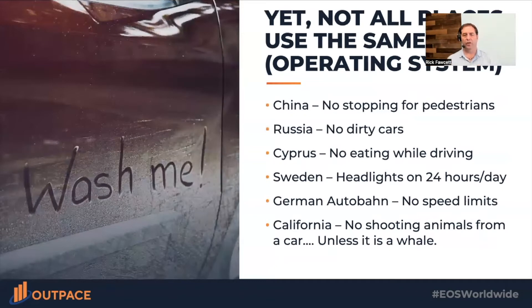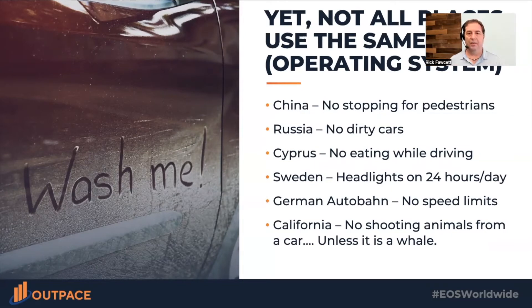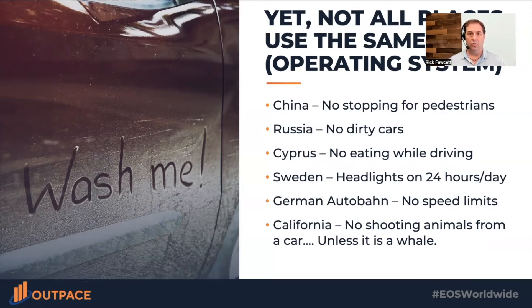Not all operating systems are the same — just like there's Apple and Android. Every country, and in the US every state, has a different way of doing things. In the United States you're expected to stop for pedestrians; in China you're not — in fact you get in trouble if you do. In Russia you can't have a dirty car or you get fined. In Cyprus, eating while driving gets you in trouble. In Sweden, if you don't have your headlights on every time you drive, you get fined.